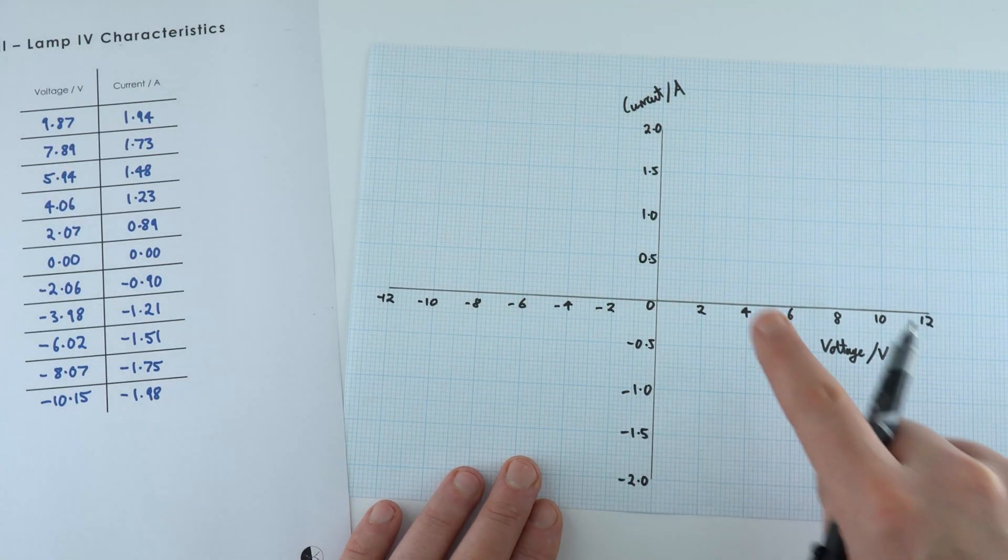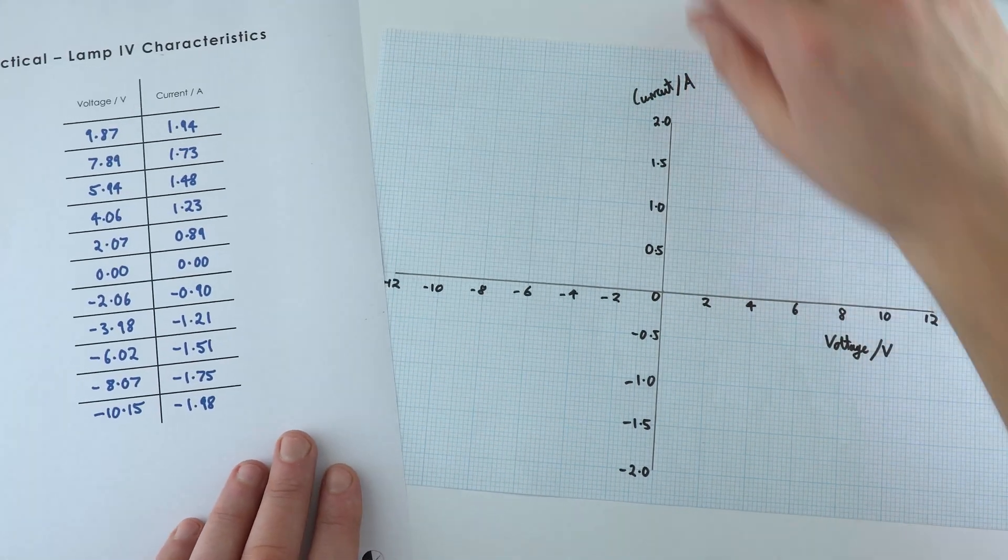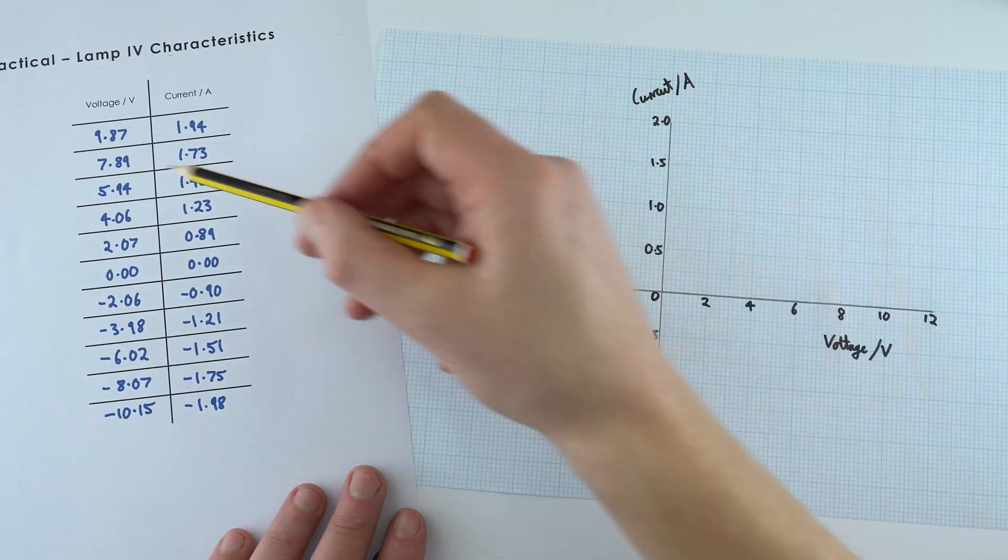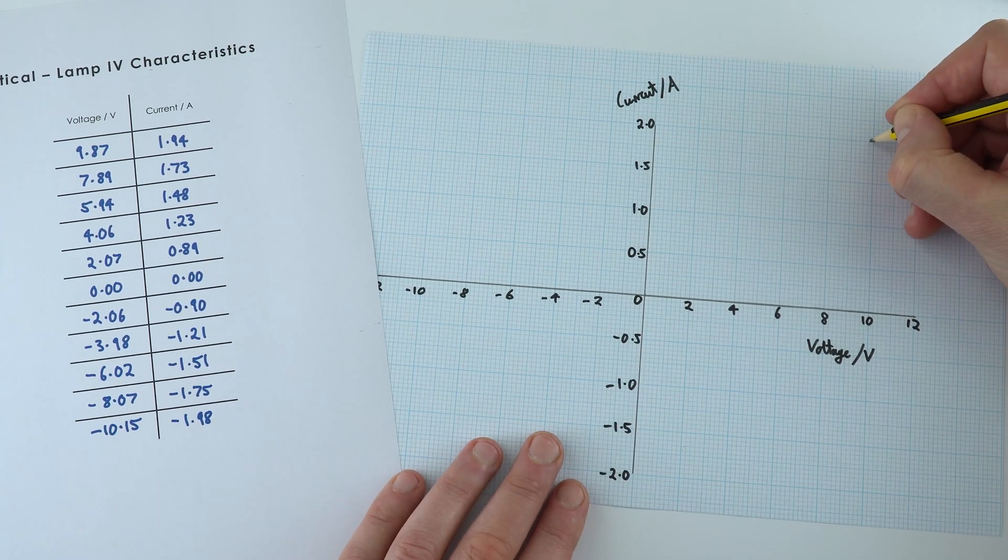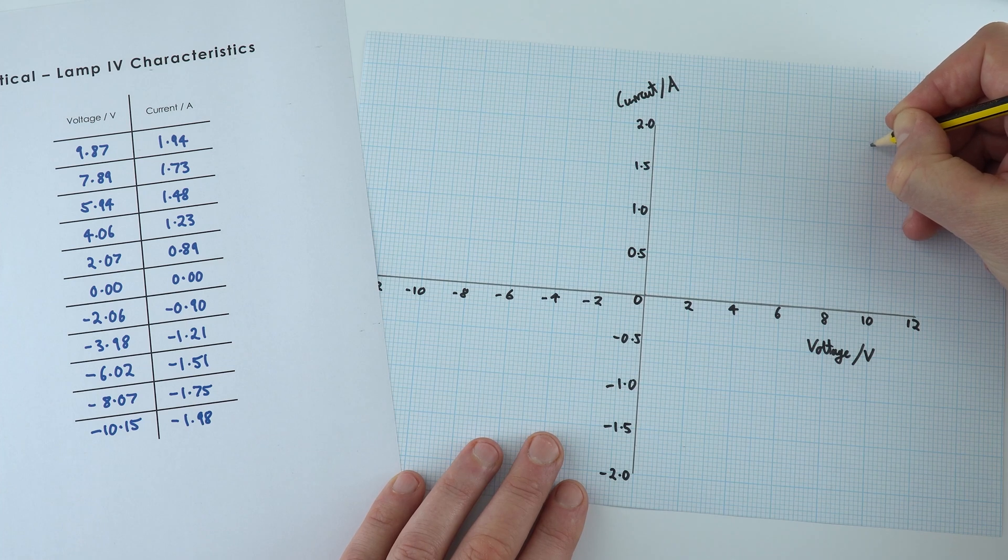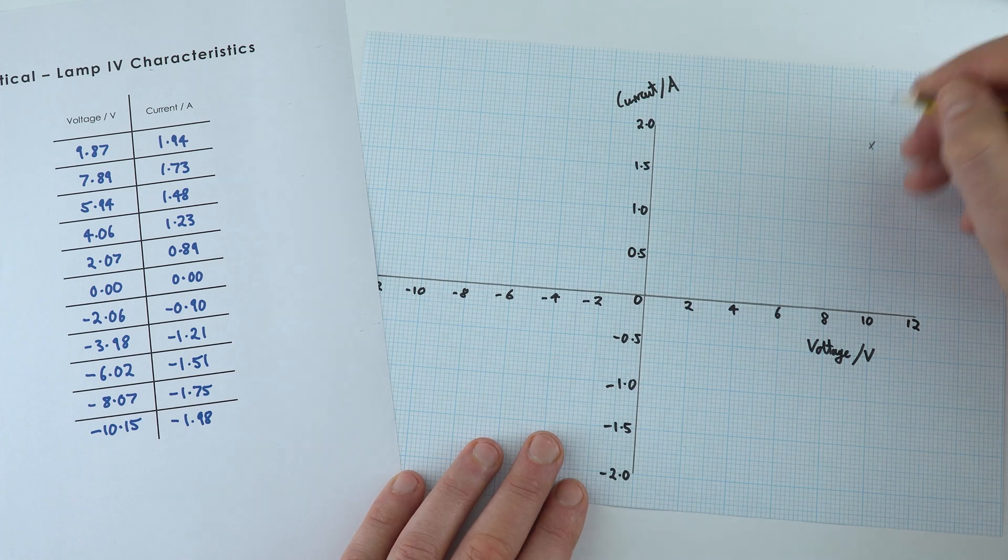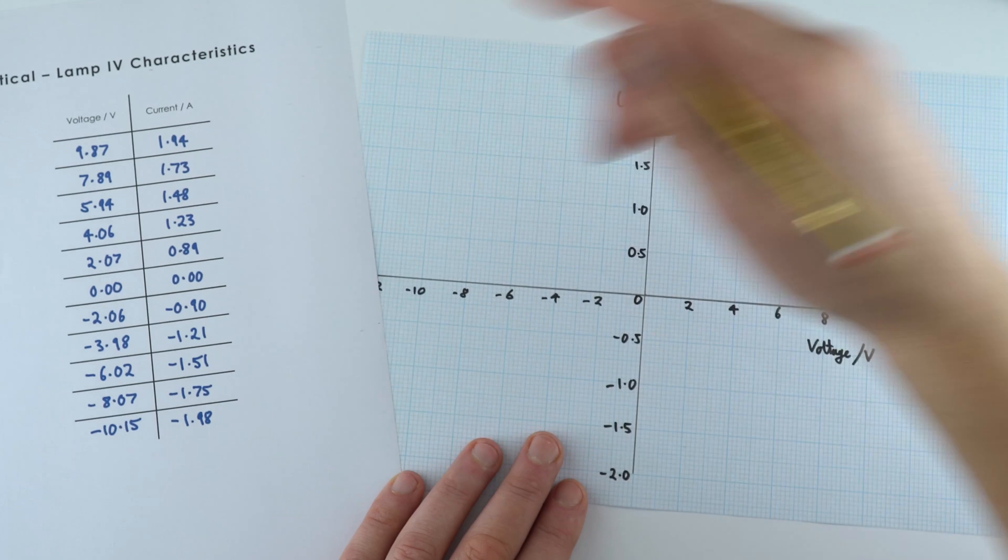So here we have current and voltage and what we can now start to do is plot some of the values. So we've got 9.87 and 1.94. So 9.87 is about here and it's 1.94 which is there and now I'm just going to plot the rest of this data.